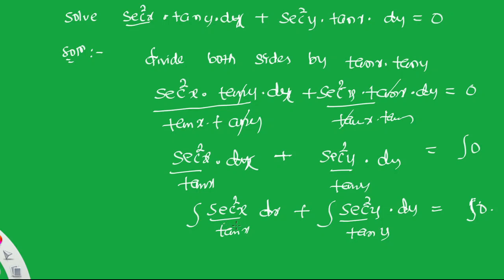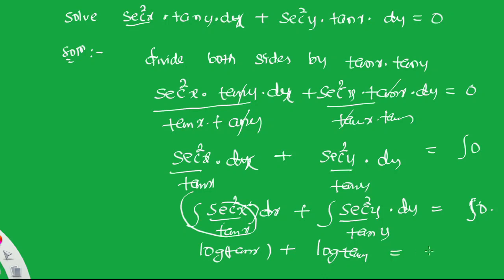Notice that sec²x is the differentiation of tanx. So using the formula ∫f'(x)/f(x) dx = log|f(x)|, integration of sec²x/tanx = log|tanx|, and similarly integration of sec²y/tany = log|tany|.